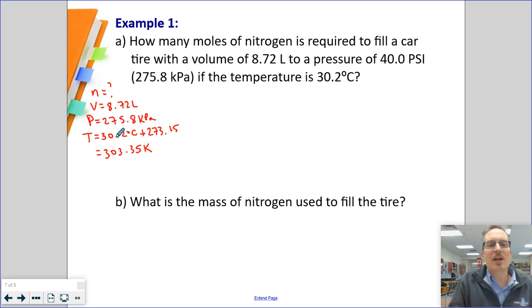Knowing that we're going to need to use our R value, we need liters, kilopascals, kelvins, and then we're going to get our answer in moles. So this is perfect. For one mark, we write down our formula. Our memorized formula is PV equals NRT.